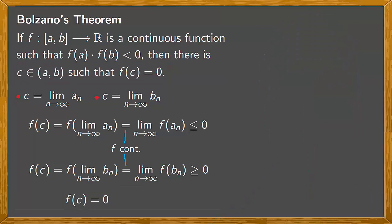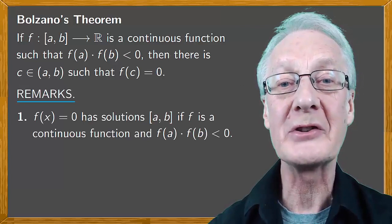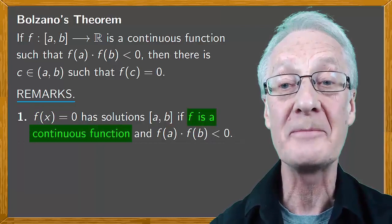What can we say about this theorem? It assures the existence of solutions and equations of the form f(x) = 0 where f is a continuous function and that there are two values whose images have different signs.